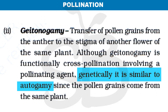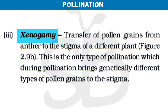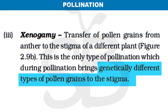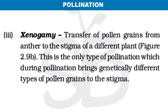The third type of pollination is xenogamy — the transfer of pollen grain from the anther to the stigma of a different plant. This type brings genetically different pollen grains, producing genetic variation through cross-pollination. The next video will discuss agents of pollination and the different types of pollinating agents.